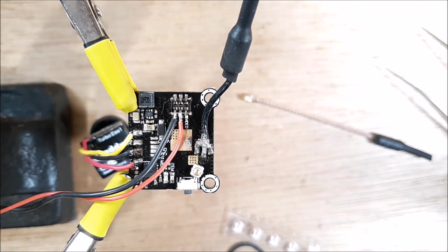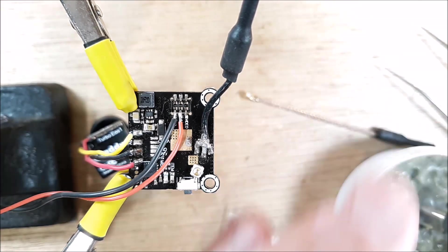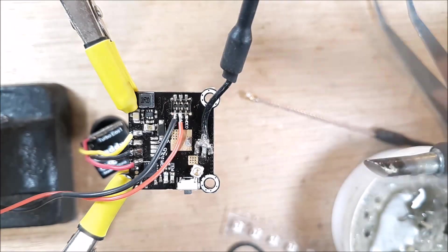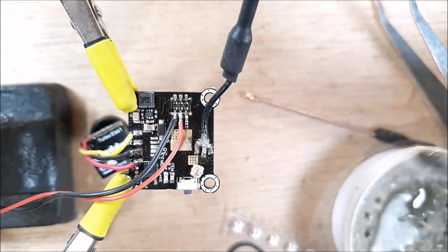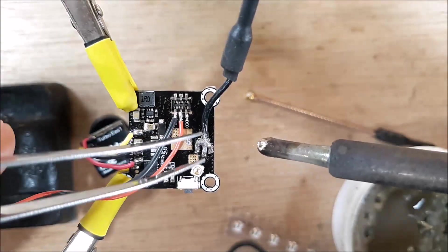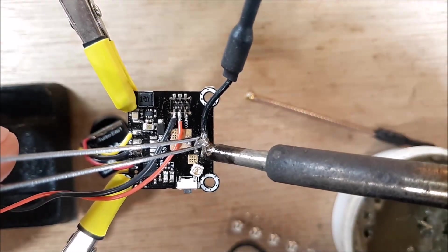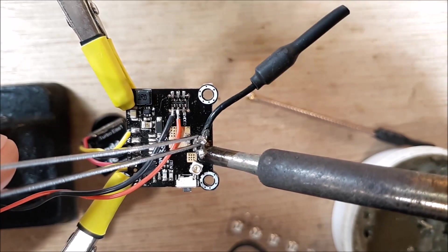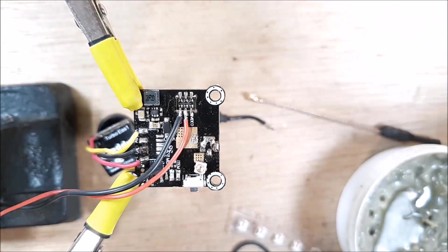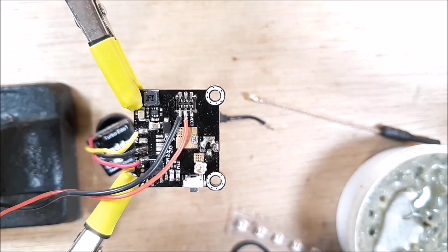The first thing we want to do is get a soldering iron nice and hot. I've got the 45-degree angle tip on here, so we're just going to de-solder this old one here. And now just take away some of that excessive solder.